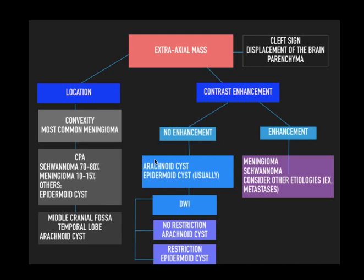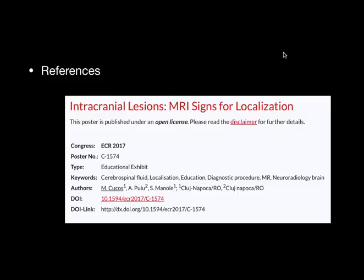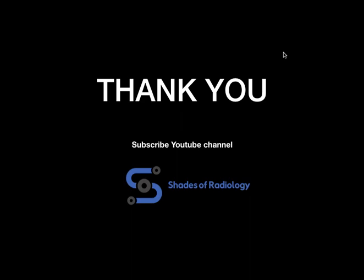If there is no enhancement, think of arachnoid cyst or epidermoid cyst — most epidermoid cysts do not show enhancement. Diffusion imaging can differentiate these two: the presence of diffusion restriction indicates an epidermoid cyst. The CSF cleft sign and displacement of the brain parenchyma are the two most important signs for extra-axial lesions. This is a great presentation available freely online at EPOS, with classic cases and signs for localizing extra-axial lesions. Thank you very much.